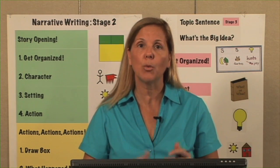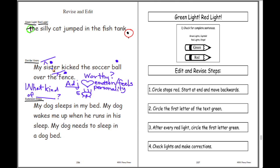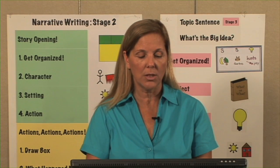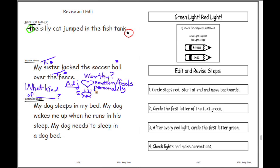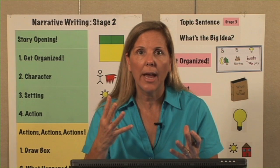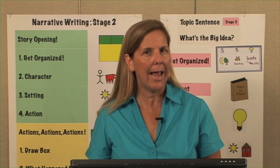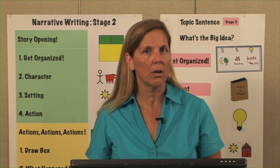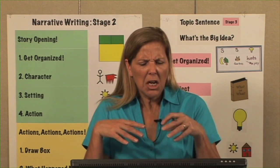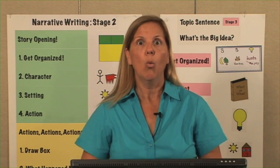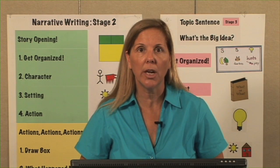That's why we want to make sure we always go 'what kind of,' put the dotted noun in there, and then the rest of the sentence: 'What kind of sister would kick a soccer ball over the fence?' Then go to your types of adjectives. Do we want to use how she feels, her personality, or describe what she looks like? What would be best?